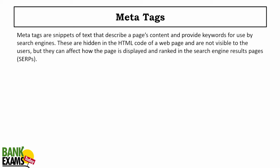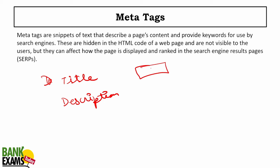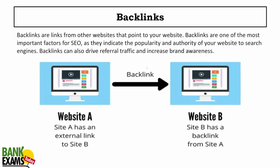Meta tags are snippets of text that describe page contents. Meta descriptions and title tags are widely used. When you search on Google, every page has a title and a description — those are meta tags. Backlinks: if site A gives an external link to site B, then site B receives a backlink from site A. That is a backlink.